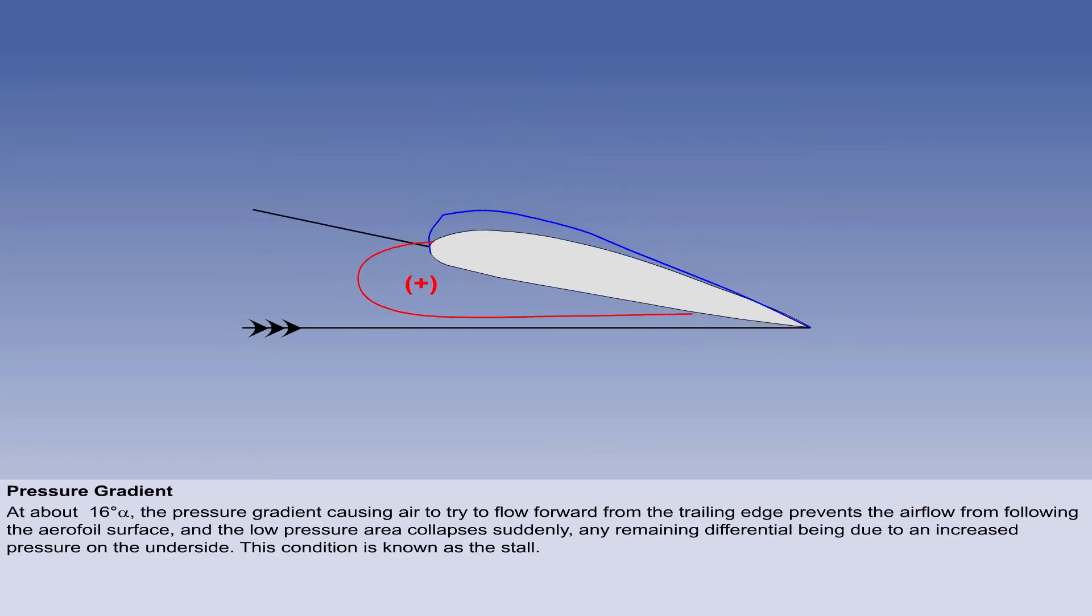As the angle of attack reaches about 16 degrees, the adverse pressure gradient is such that the air is trying to flow forward from the trailing edge against the air flow, preventing the previously smooth streamlined flow from following the surface of the aerofoil, and causing the low pressure area over the upper surface to collapse suddenly. Any pressure differential remaining is due to the pressure increase on the underside only. This condition is known as the stall, described fully in a later lesson.